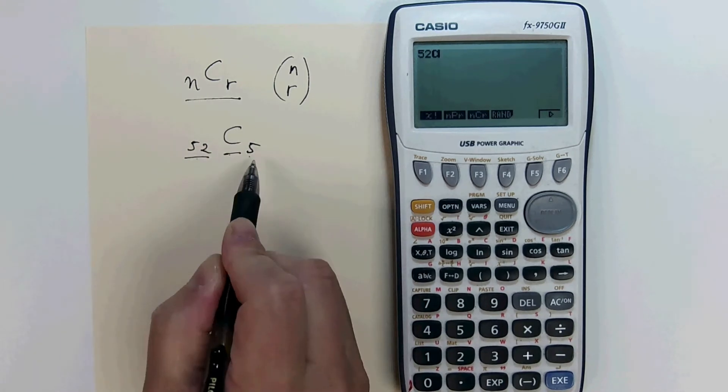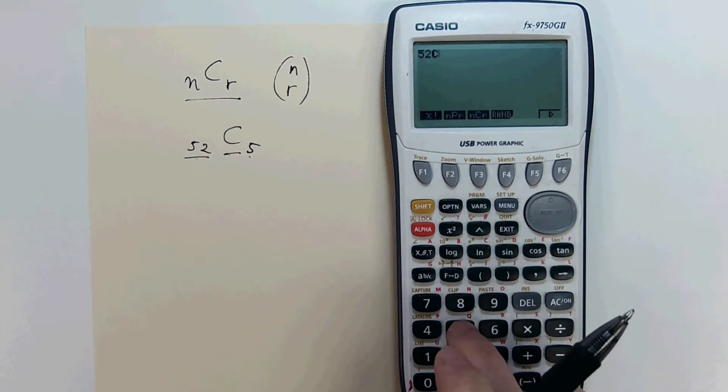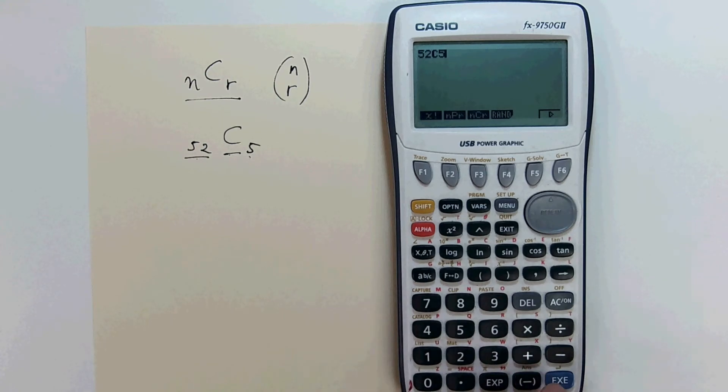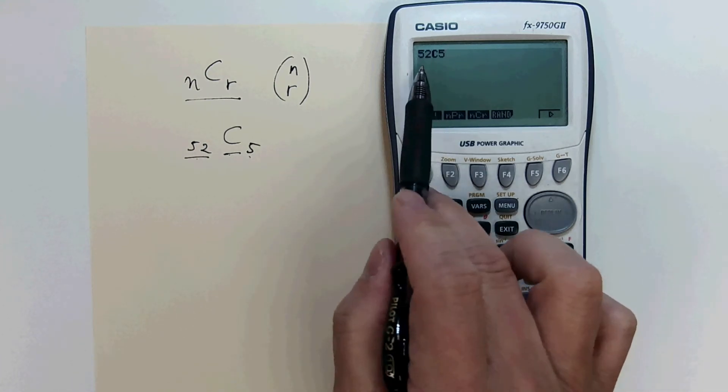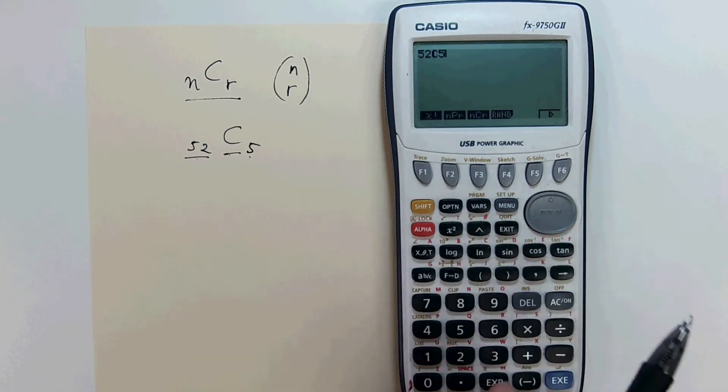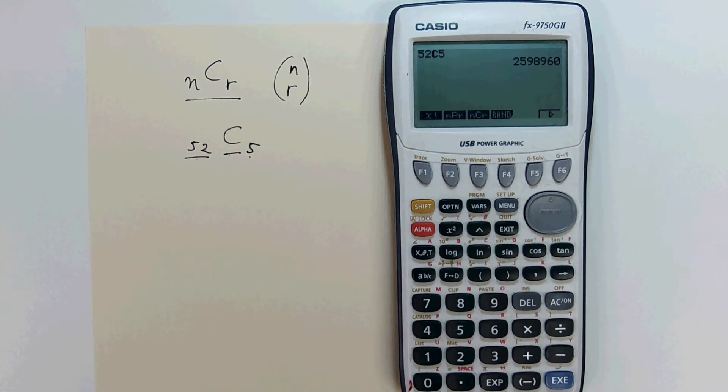That gets us C. We still need the 5. Type in 5. Now the screen shows 52C5. Press execute to compute. There's the answer. 2,598,960.